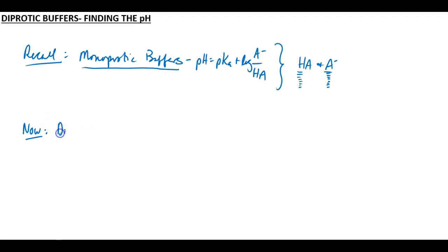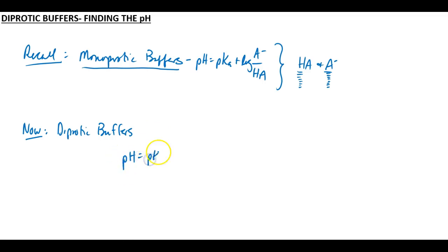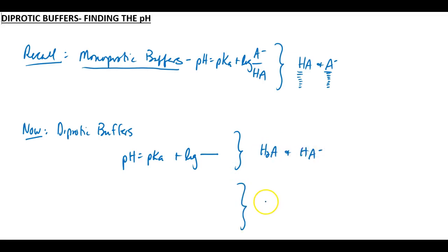With diprotic buffers, you sort of have an extra decision to make. You're still going to use pH equals pKa plus the log of some quotient, but you've got an extra decision to make because we could have a buffer prepared from H2A and HA minus, or we could have a buffer prepared from HA minus and A minus 2.